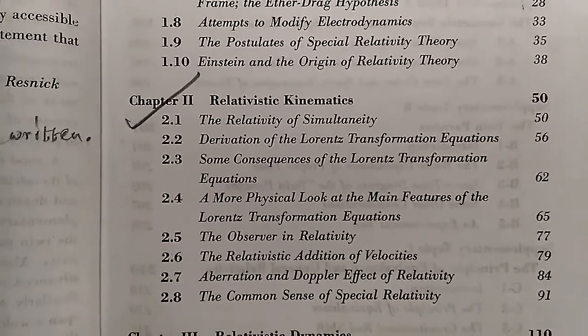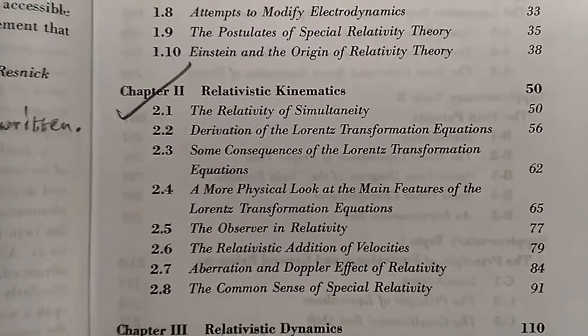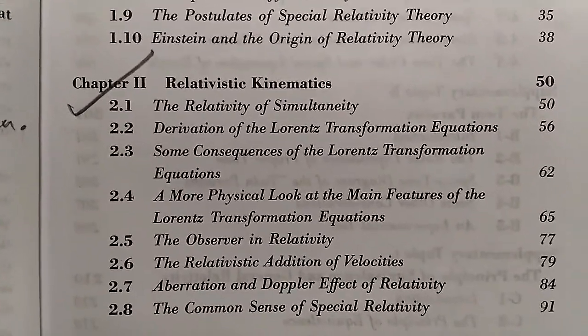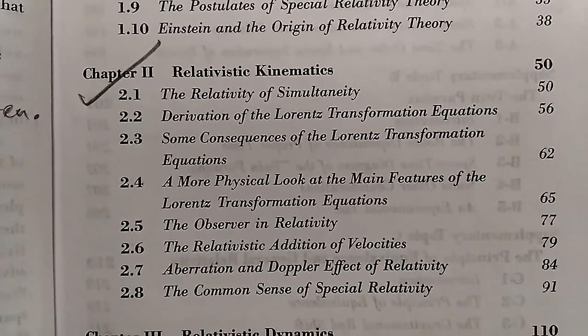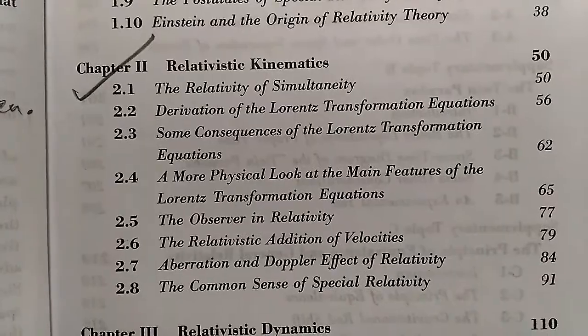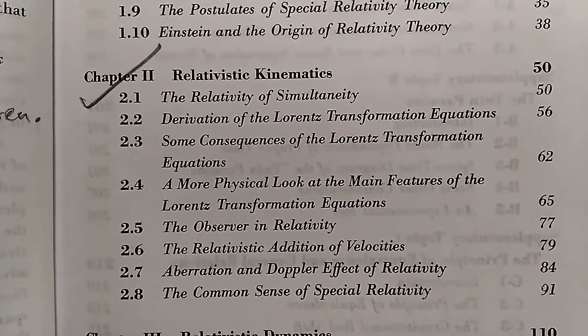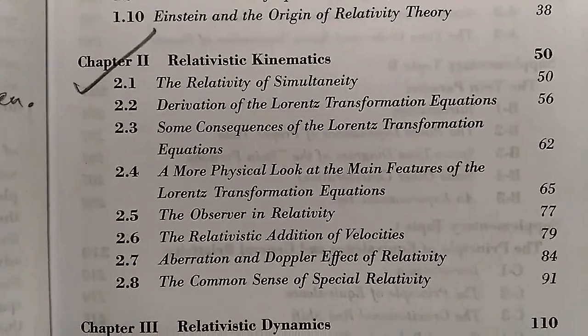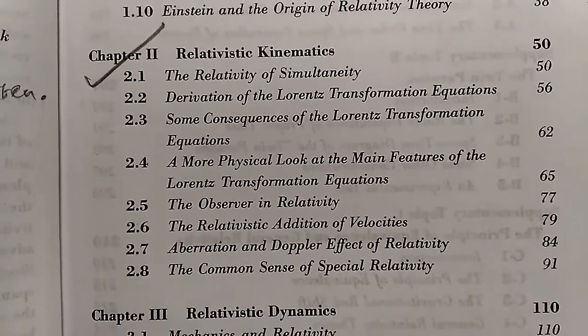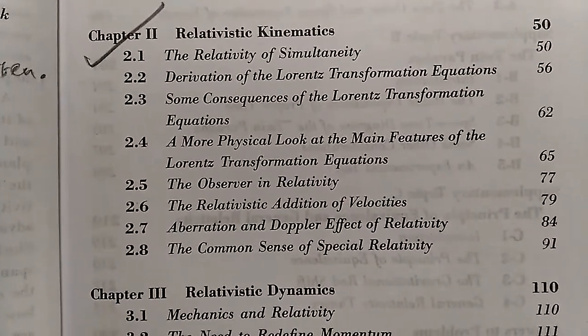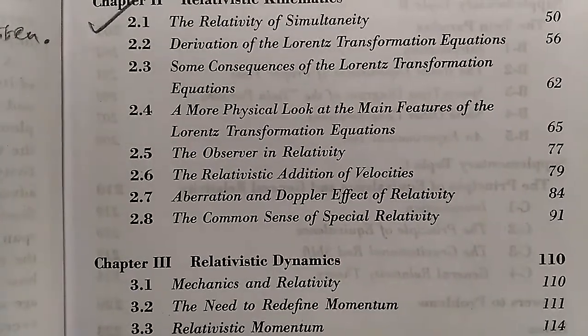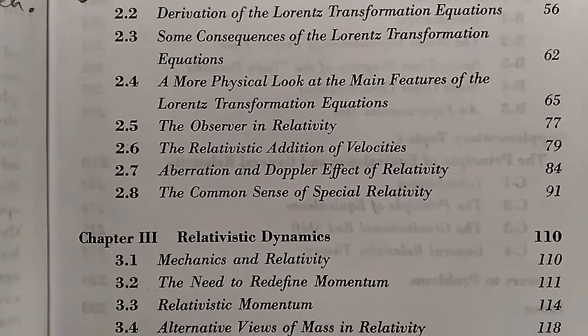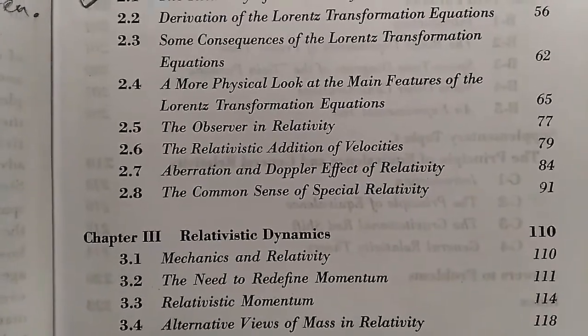Then it contains a chapter on relativistic kinematics, which contains the relativity of simultaneity, derivation of the Lorentz transformation equations, some consequences of the Lorentz transformation equations, that means time dilation and length contraction, and then the observer effect in special relativity, the relativistic addition of velocity, and Doppler effect in relativity.